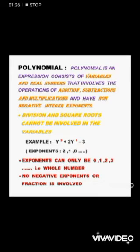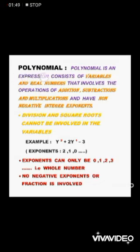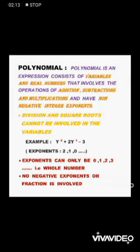Let us now see the definition of a polynomial. A polynomial is an expression consisting of variables and real numbers that involves the operations of addition, subtraction, and multiplication, and has non-negative integer exponents. Polynomials are part of algebraic expressions that include variables and real numbers where the variables involve only addition, subtraction and multiplication. Divisions and square roots cannot be involved in the variables — this is the distinguished feature that separates polynomials from algebraic expressions. Non-negative integer exponents means the exponent should not be a negative value; it should be a whole number.